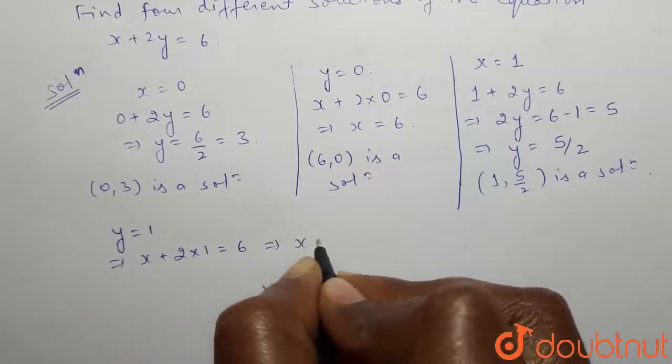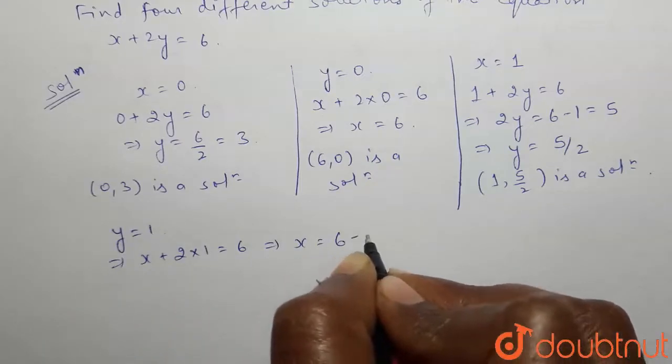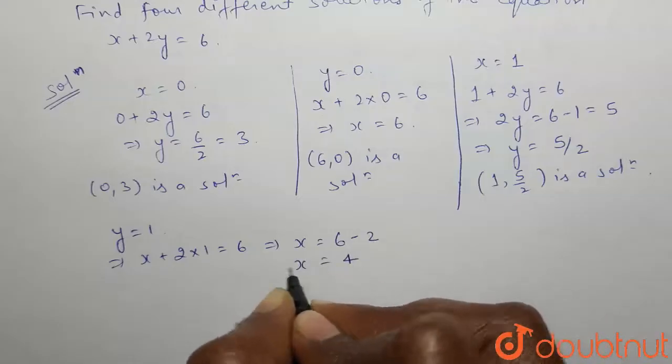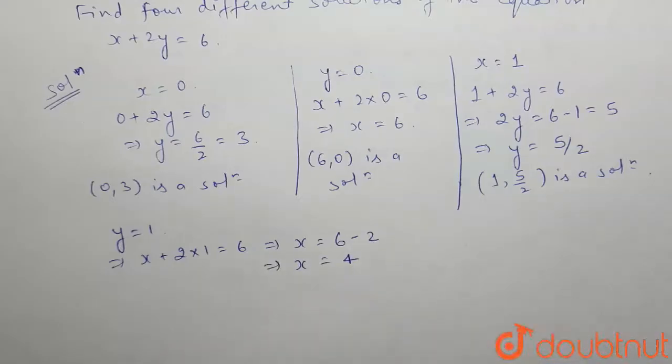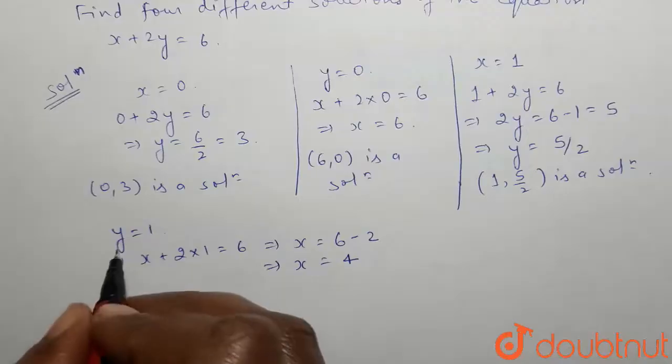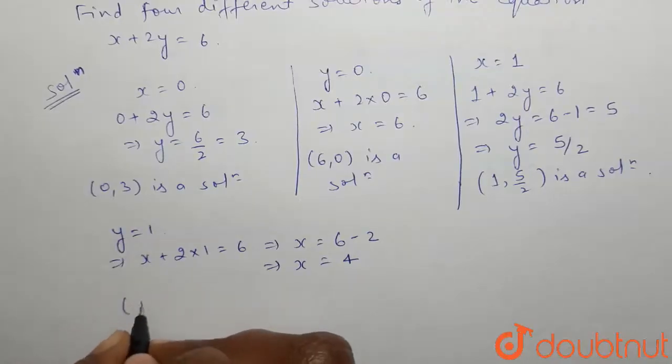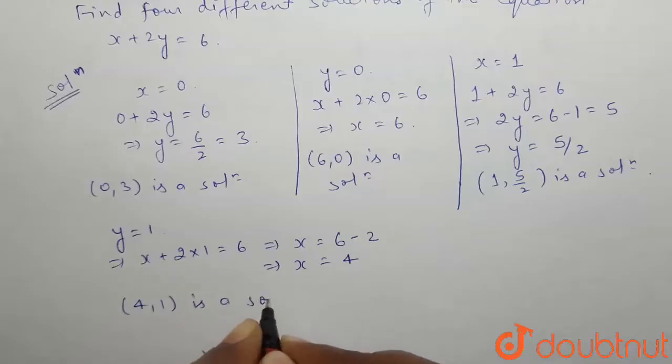This gives x equals to 6 minus 2, which is equal to 4. So the value of x is 4 when y equals to 1. Therefore, (4, 1) is a solution.